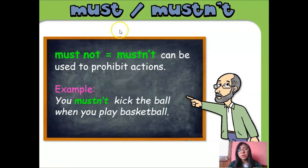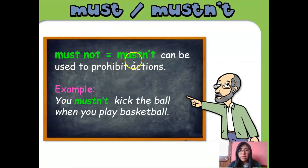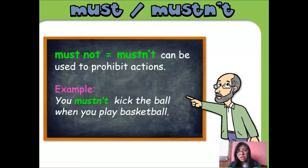We are going to review must not. Must not is the negative form of must, and mustn't is the contraction. It can be used to prohibit actions. It means that we are going to use mustn't in order to prohibit something. Remember: must to express an obligation — para expresar una obligación. Mustn't to prohibit any action — vamos a utilizar para prohibir cualquier acción.